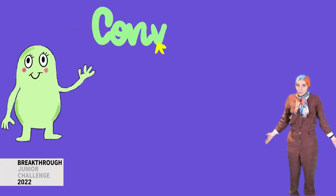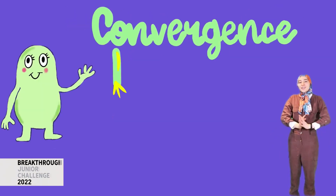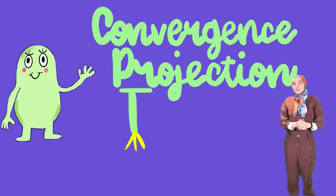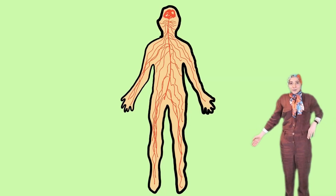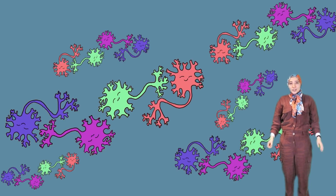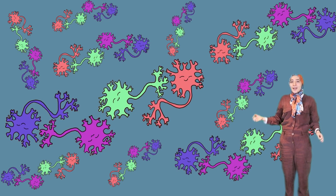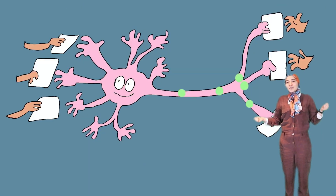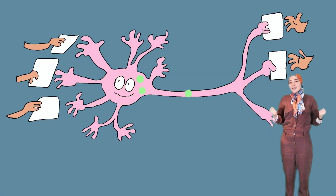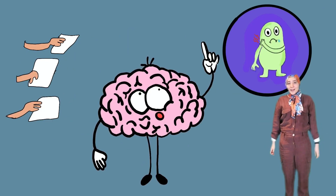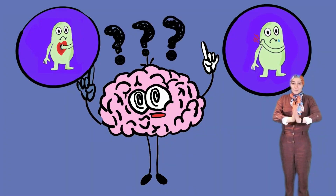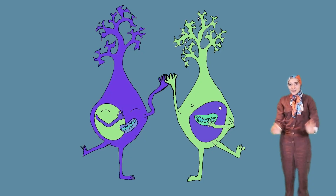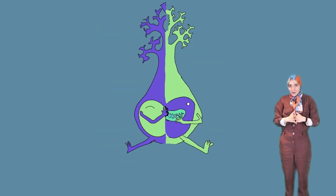Why though? Let me introduce you to the convergence projection theory. Inside you are billions of neurons which detect stimuli and send signals to your brain so that you can feel things and experience pain. The brain, however, can't always tell where this pain originates — because neurons converge.